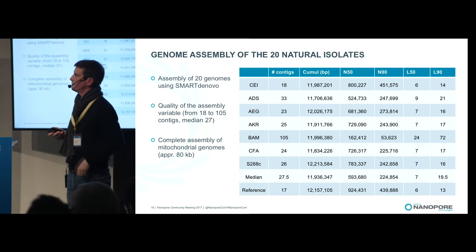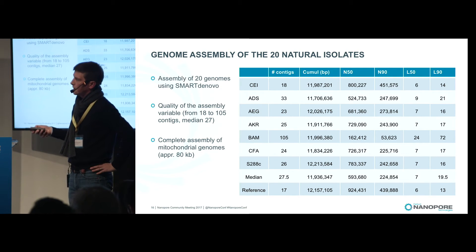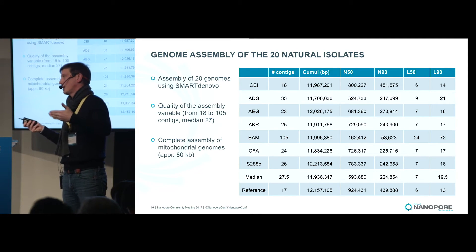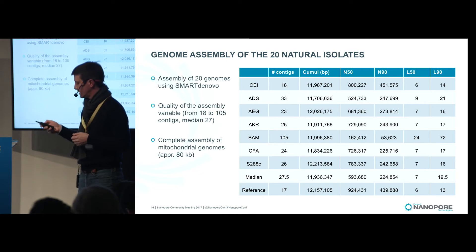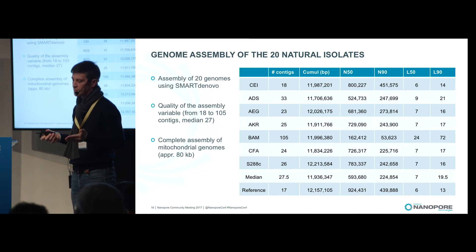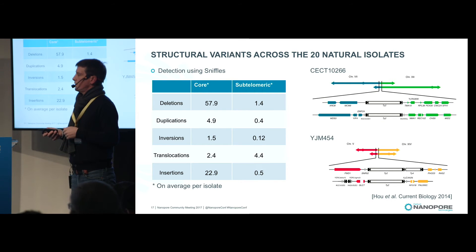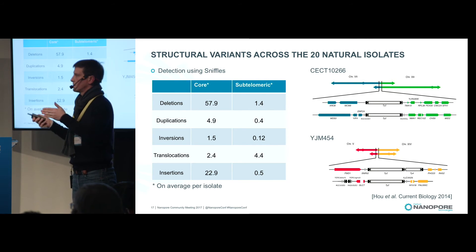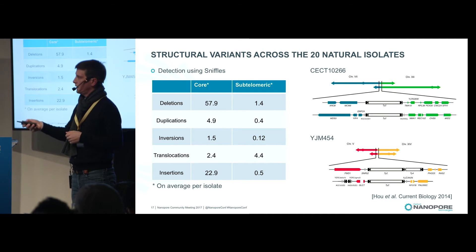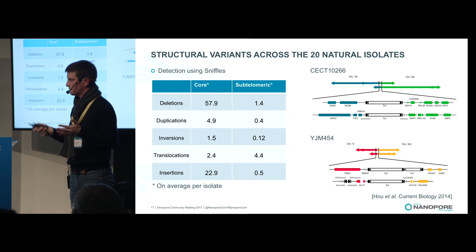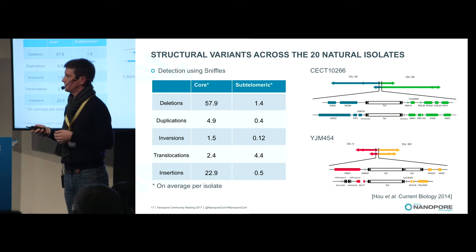We performed de novo assembly of the 20 natural isolates. The quality of the assemblies is pretty good, with around 18 contigs, though sometimes a higher number. Importantly, we could assemble the mitochondrial genomes, which is mostly difficult to do with short reads. We detected different structural variants using sniffles, in both the core and subtelomeric regions — mainly deletions and insertions. We confirmed some of these structural variants, confirming this sequencing strategy is a good way to detect structural variants.